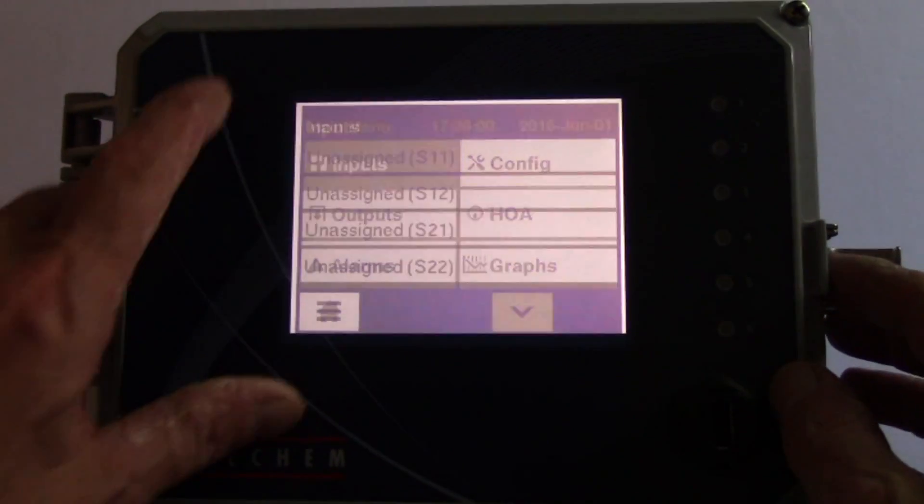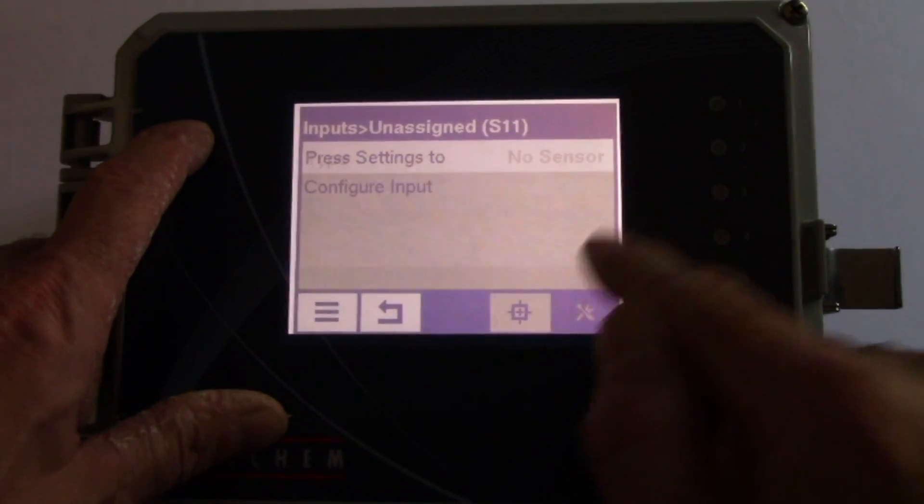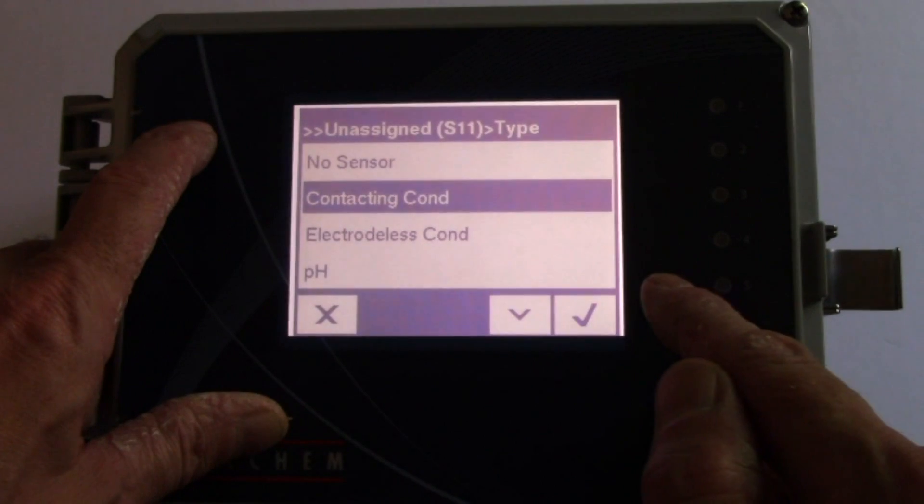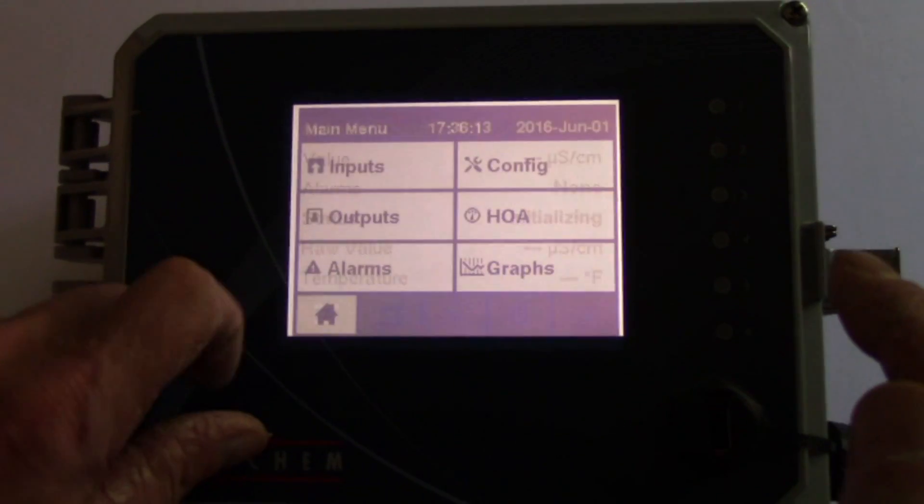For the sensor, press inputs and then sensor 1. The settings key, type, and choose contacting conductivity. Hit the check to accept it, and then back to the main menu.